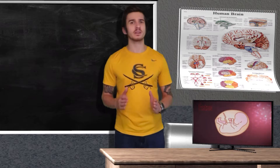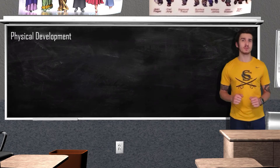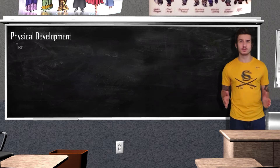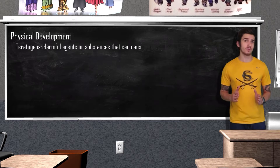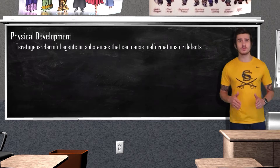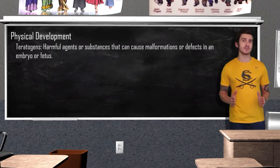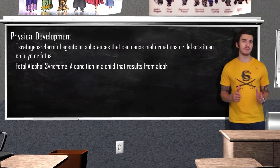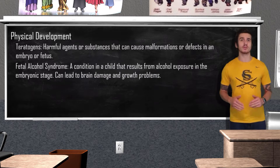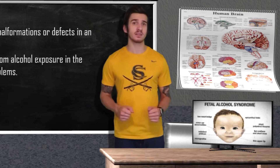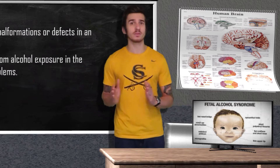All organs are present in a rudimentary form and the developing baby starts to take the form of a human — at this stage we refer to the future baby as a fetus. While in the womb babies are very susceptible to illnesses the mother has or anything ingested. Teratogens are harmful agents or substances that can cause malformations or defects to the embryo or fetus. A major teratogen, alcohol, can lead to fetal alcohol syndrome (FAS), which results from alcohol exposure during the mother's pregnancy and can cause issues with both cognitive and physical development.